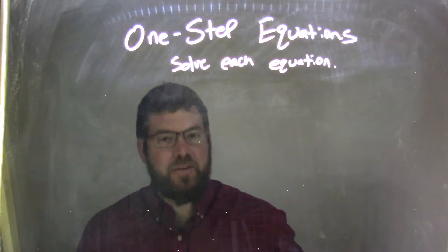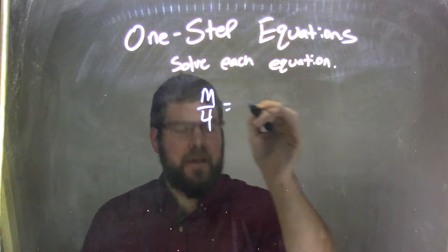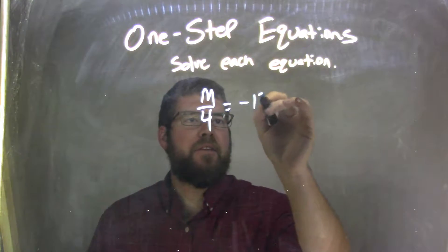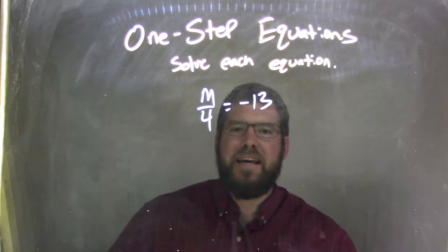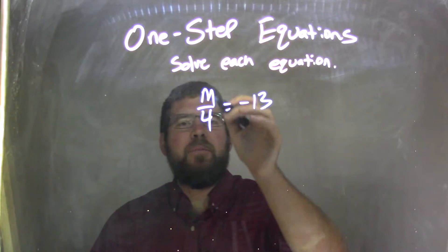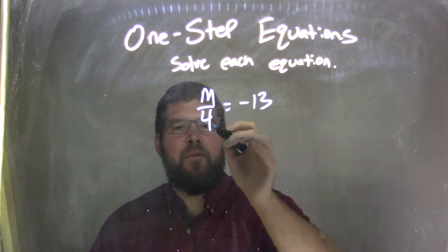If I was given this equation, m over 4 equals negative 13. Well, m divided by 4 is really what's going on here, right? m over 4.